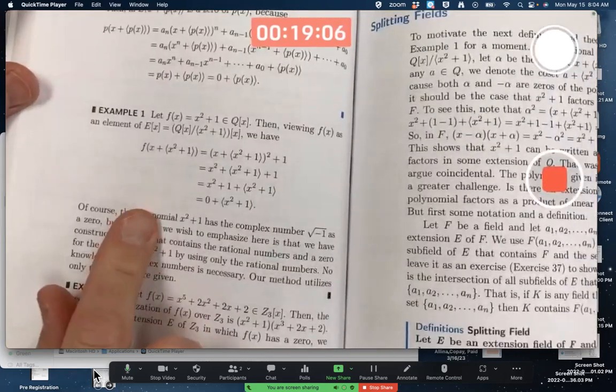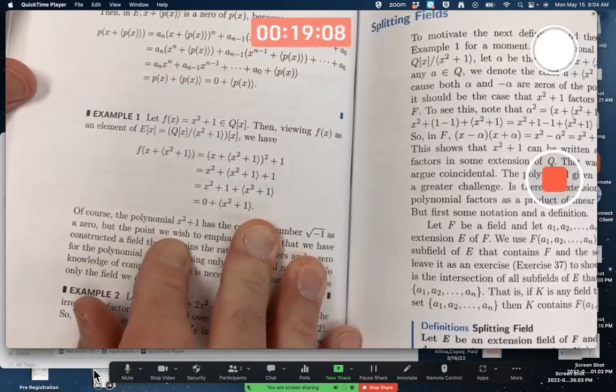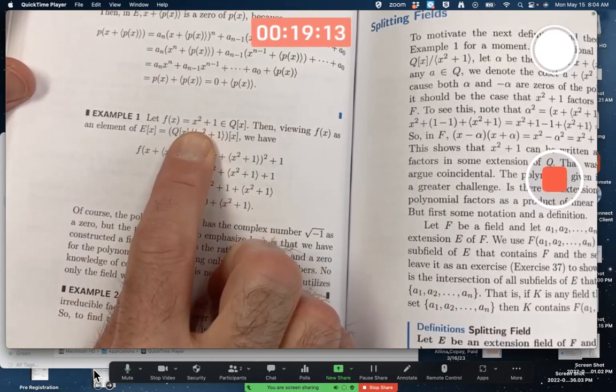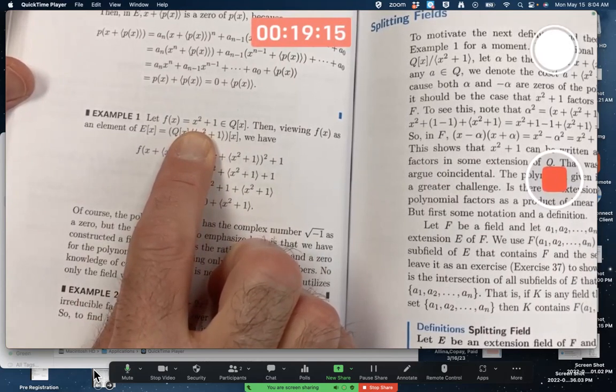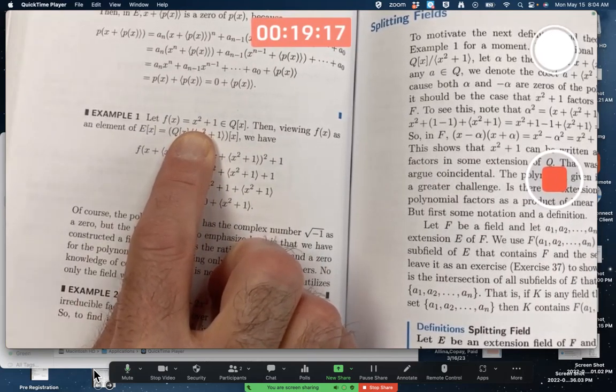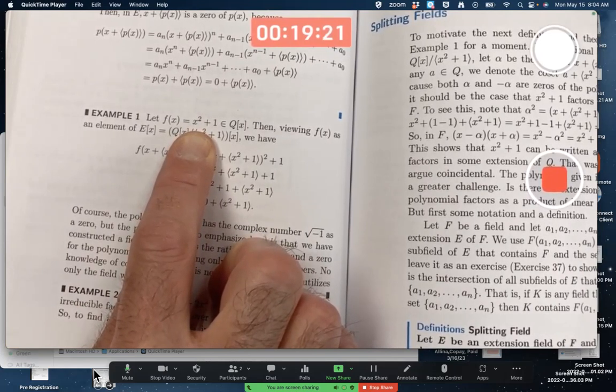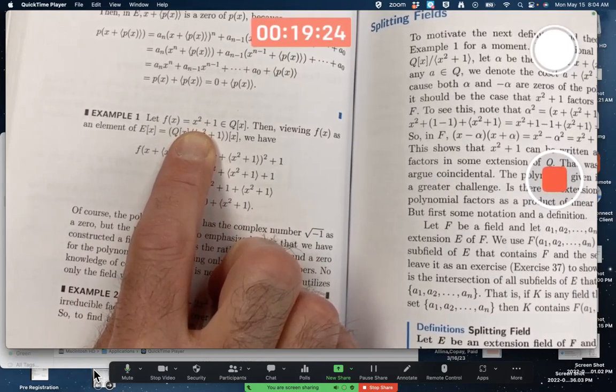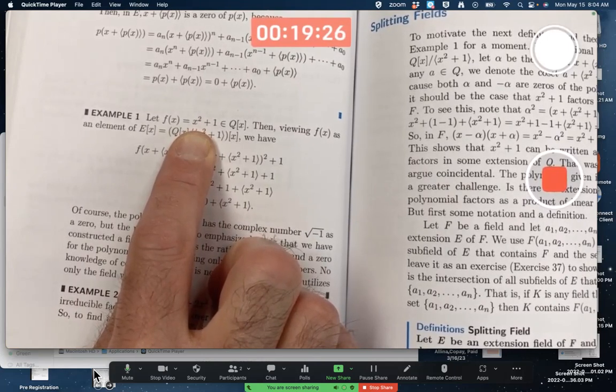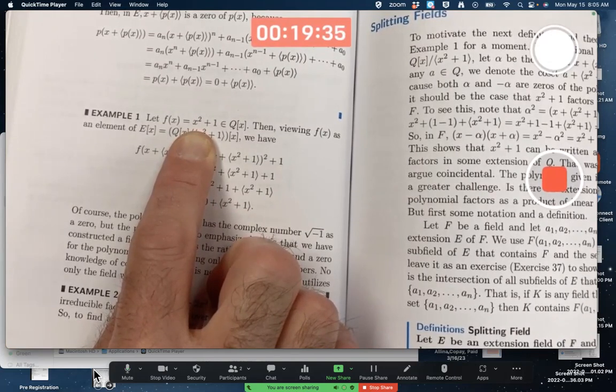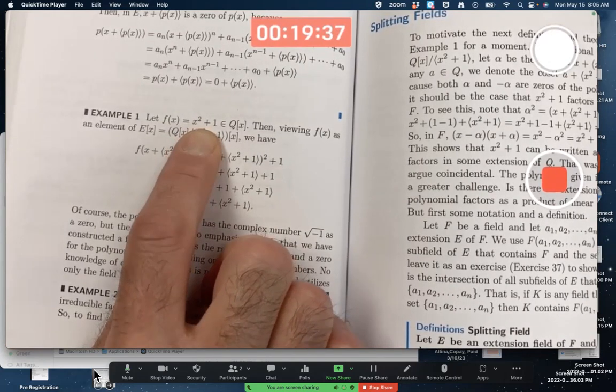Illustrated also with this example. With this example, they're thinking of a field extension of the rationals containing a root of x² + 1. Obviously the complex numbers do, though careful, the complex numbers are not a splitting field for this polynomial because they contain many more things. We want a minimal splitting field extension. Q adjoin i would be an ordinary kind of field extension containing a root of this.